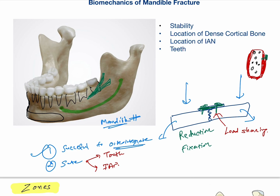We know where it is advisable to put the screw and where it is not. One more thing we need to know about the inferior alveolar nerve is its distance from the cortical bone. In cross-section, the inferior alveolar nerve is typically eight to ten millimeters away from the inferior border of the mandible. From the buccal cortex, this distance is four to six millimeters — this we must keep in mind when placing osteosynthesis screws with mini plates.